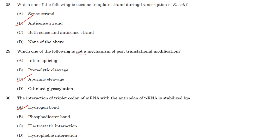The interaction of the triplet codon of mRNA with the anticodon of tRNA is stabilized by hydrogen bonds, because the nitrogenous bases present in the codon and anticodon bond together by hydrogen bonds.